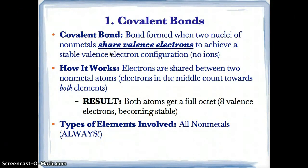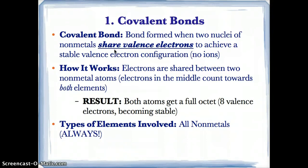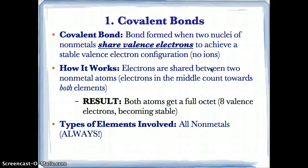The two atoms or nuclei will actually share valence electrons to achieve a stable valence electron configuration. Because these nonmetal atoms share valence electrons, there is no loss or gain of electrons — no sacrifice or giving of electrons from one atom to another. Since no electrons are being lost or gained, and covalent bonds only involve sharing between nonmetal atoms, covalent bonds do not involve ions, but rather just atoms.